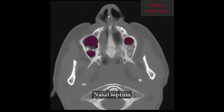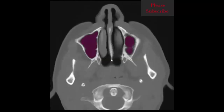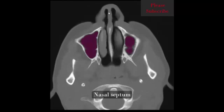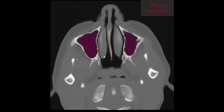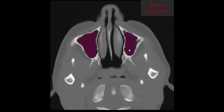On this slice we can identify the nasal septum, right and left maxillary sinus, nasal cavity, and right and left inferior turbinate.